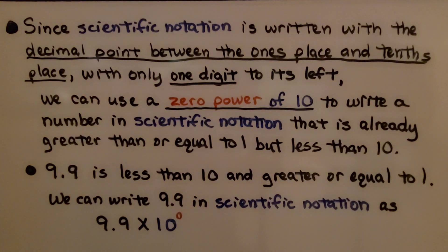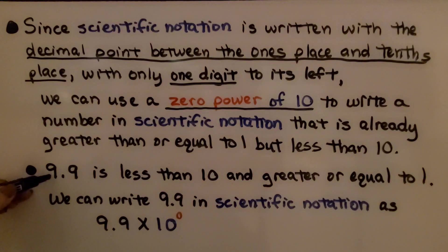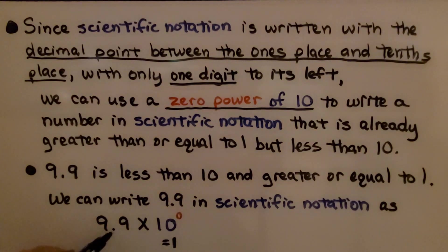Since scientific notation is written with the decimal point between the ones place and tenths place — with only one digit to the left of the decimal point — we can use a zero power of 10 to write a number already between 1 and 10 in scientific notation. For example, 9.9 is less than 10 and greater than or equal to 1, so we write it as 9.9 times 10 raised to the zero power. Since 10 to the zero equals 1, we have 9.9 times 1, which equals 9.9.